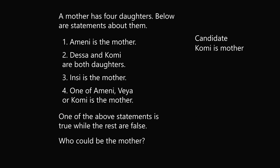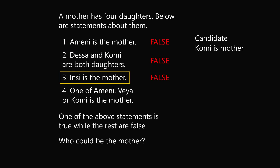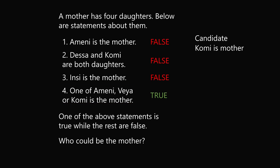We now consider the possibility that Komi is the mother. Statement 1, that A-meni is the mother, would be false. Statement 2, that Dessa and Komi are both daughters, would be false. Then Insi is the mother would be false. And statement 4 — one of A-meni, Veya, or Komi is the mother — is true, because Komi is the mother. So we have a situation where one statement is true while the others are false. Komi is the mother is a possible answer.